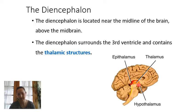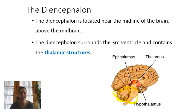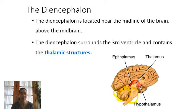So we've covered the brainstem and the cerebellum — that part at the back that looks like a little piece of cauliflower. Now we're moving up into the diencephalon. The diencephalon is the deep inner portion of the brain and consists of three structures: the thalamus, the hypothalamus, and the epithalamus.